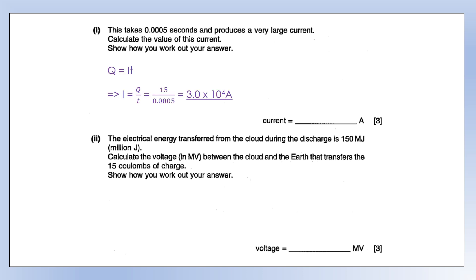I'm going to use Q equals IT. We can rearrange it to calculate the current, and then we plug the numbers in to give us 30,000 amps, which you can agree is a pretty high current. That's one of the reasons lightning is fairly dangerous.